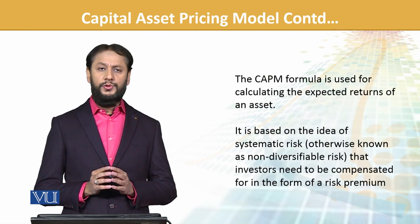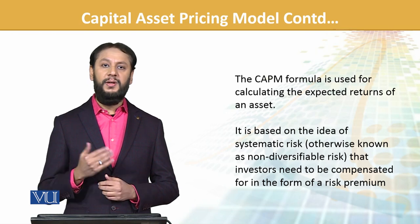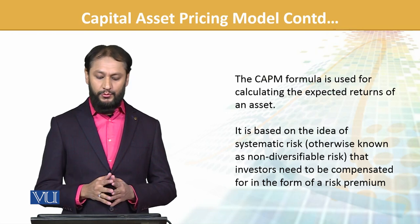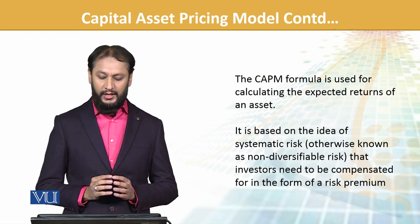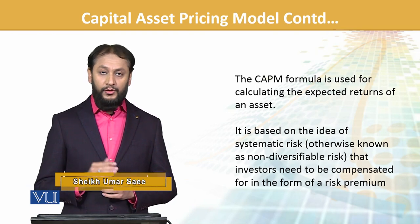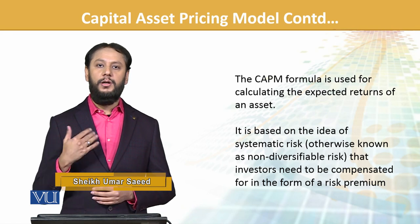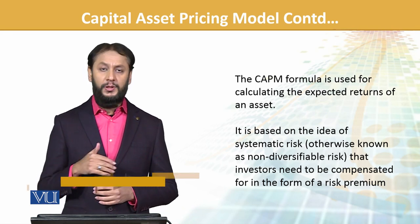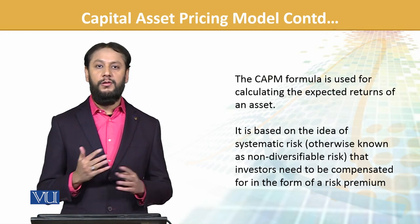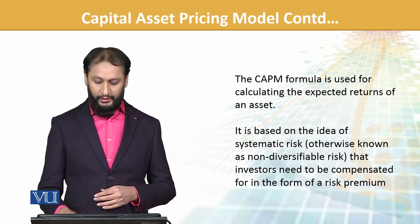The CAPM formula is used for calculating the expected return of an asset. The main objective is to find expected return — that's where CAPM's utility comes in. It is based on the idea of systematic risk: the risk that belongs to the market, and based on that market risk, what return are we going to get? The investor needs to be compensated because this risk cannot be diversified — it is non-diversifiable — so we have to see what return we are getting on it.